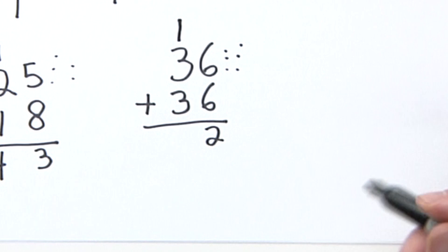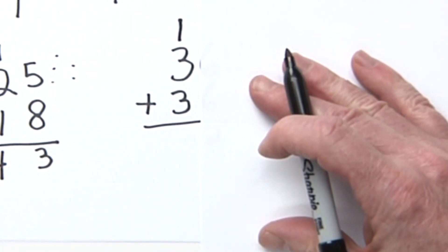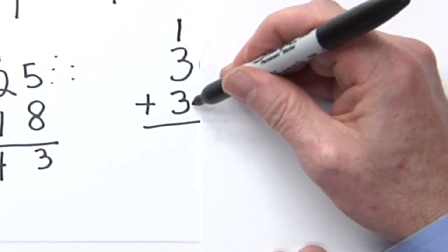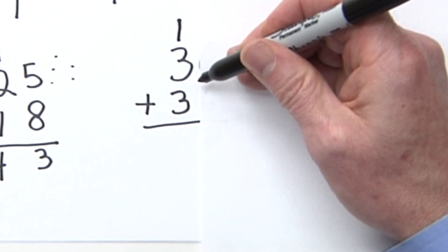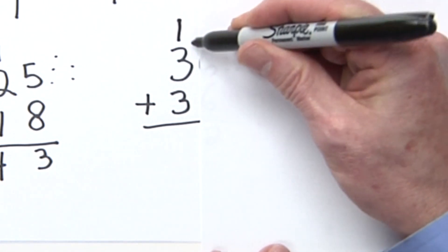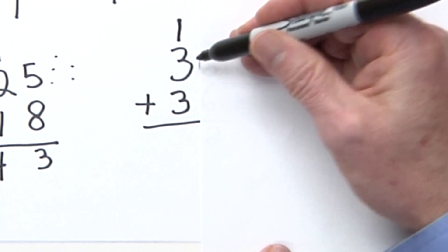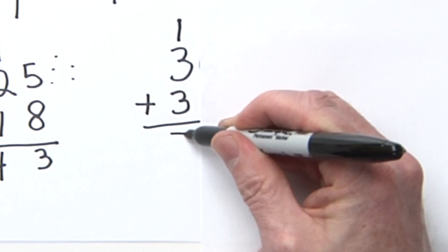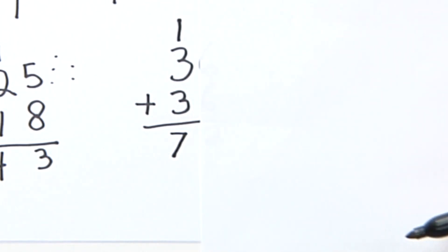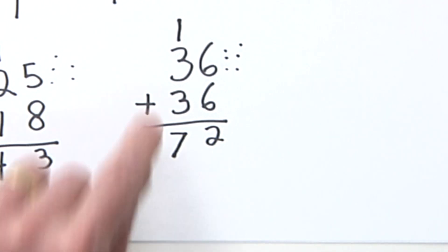Okay, now let's add the tens. 3 plus 3 - it's a double fact. 3 plus 3 is 6, plus 1 more: 7. Seven sent from heaven! There you go: 72. 36 plus 36 equals 72.